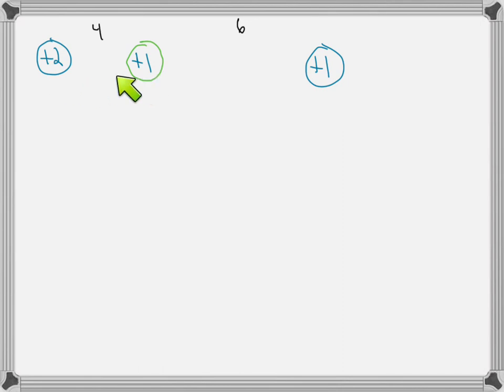So because there's greater repulsion force between the plus 2 and the plus 1 than the plus 1 and the plus 1, the net force is going to be in this direction.